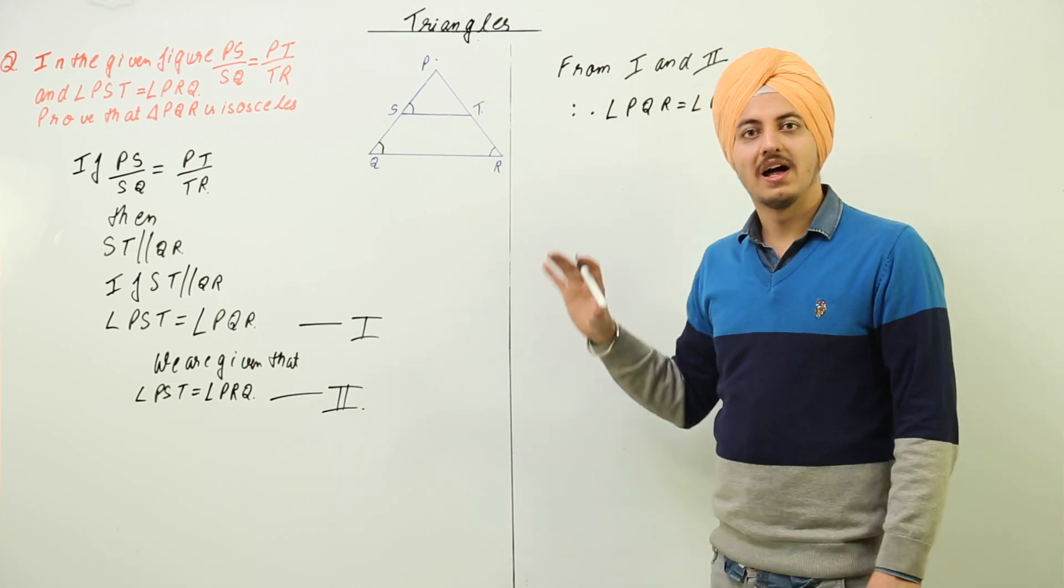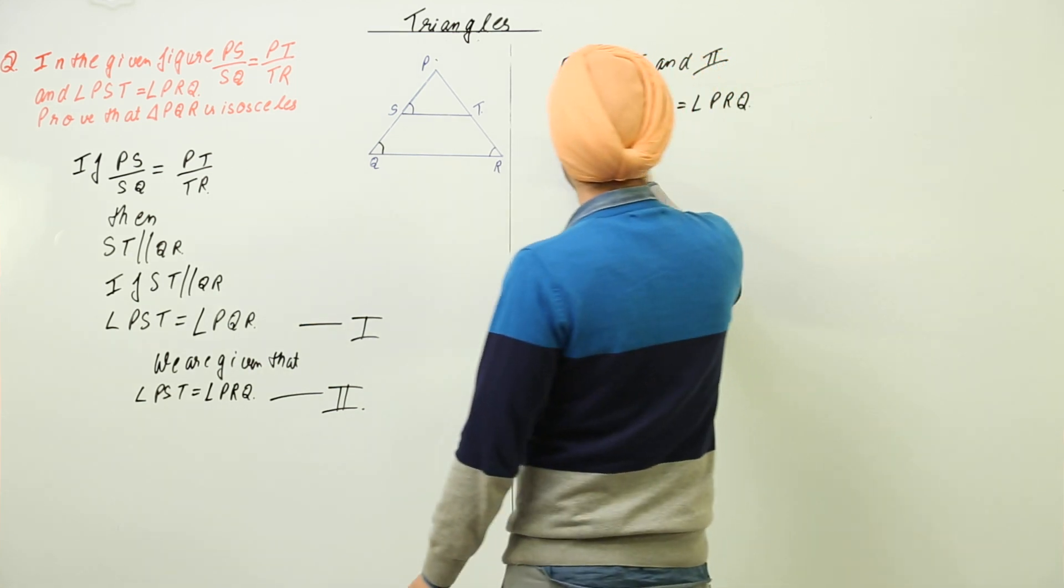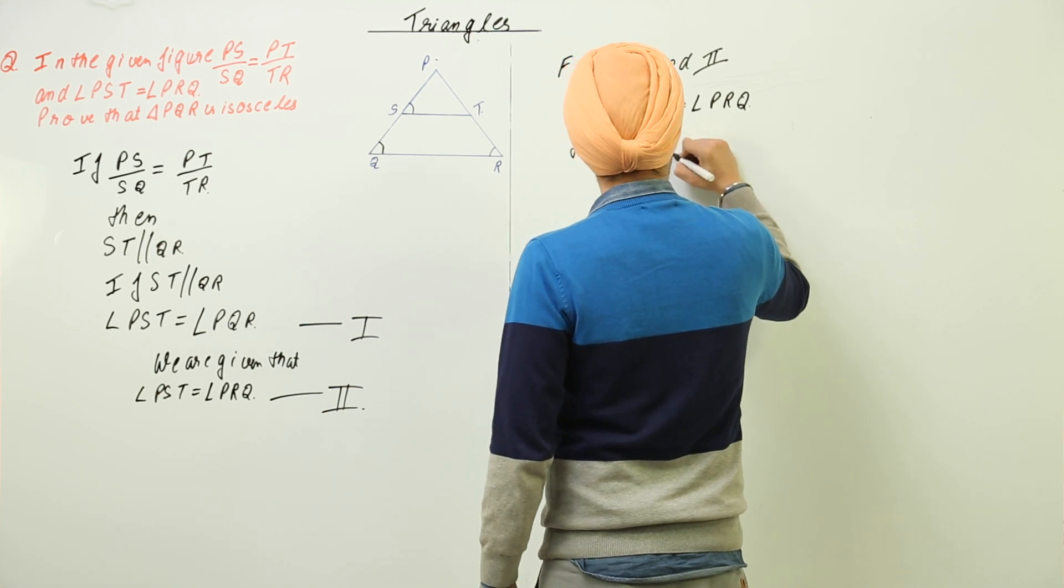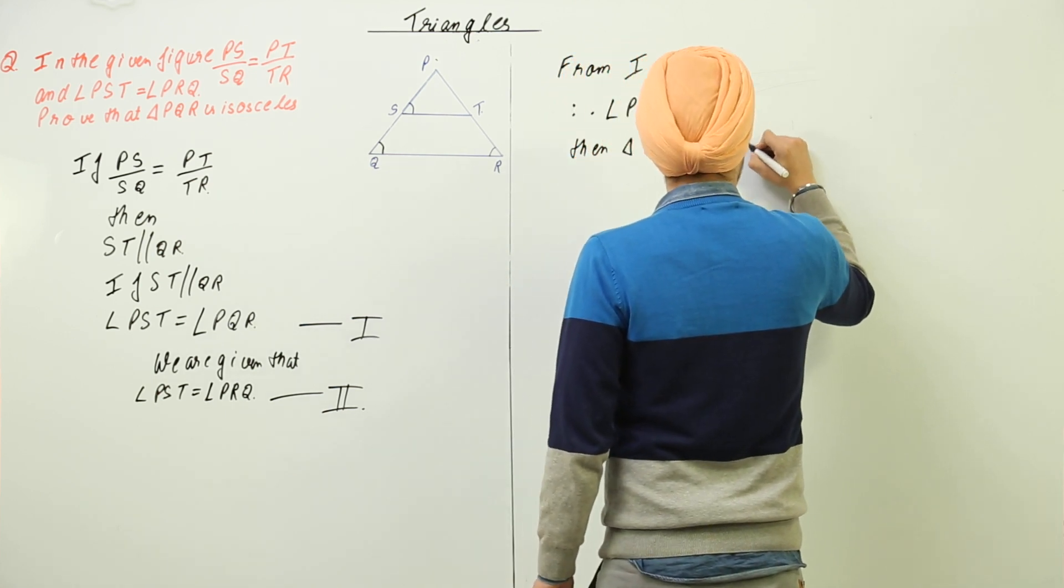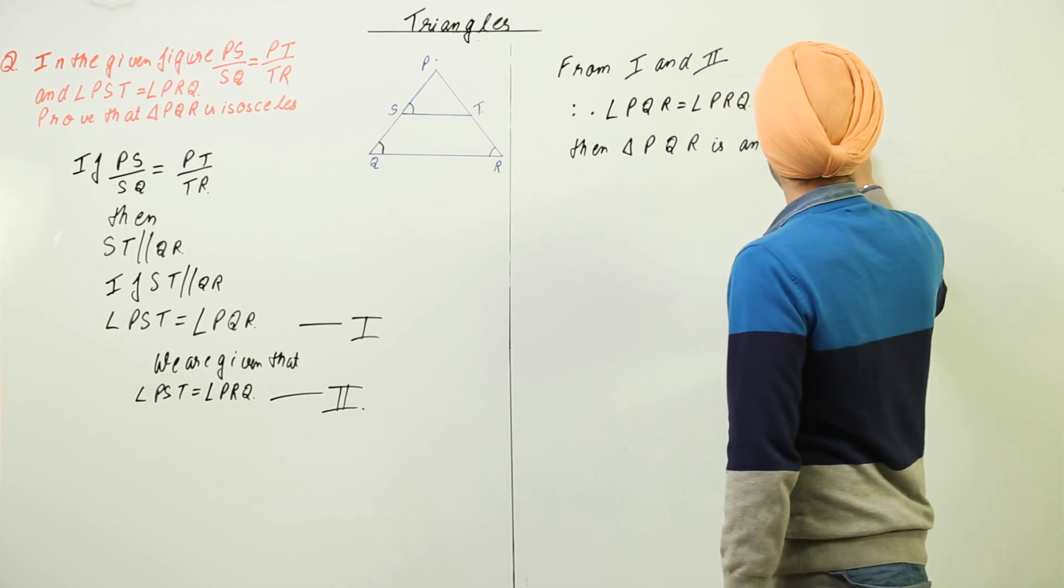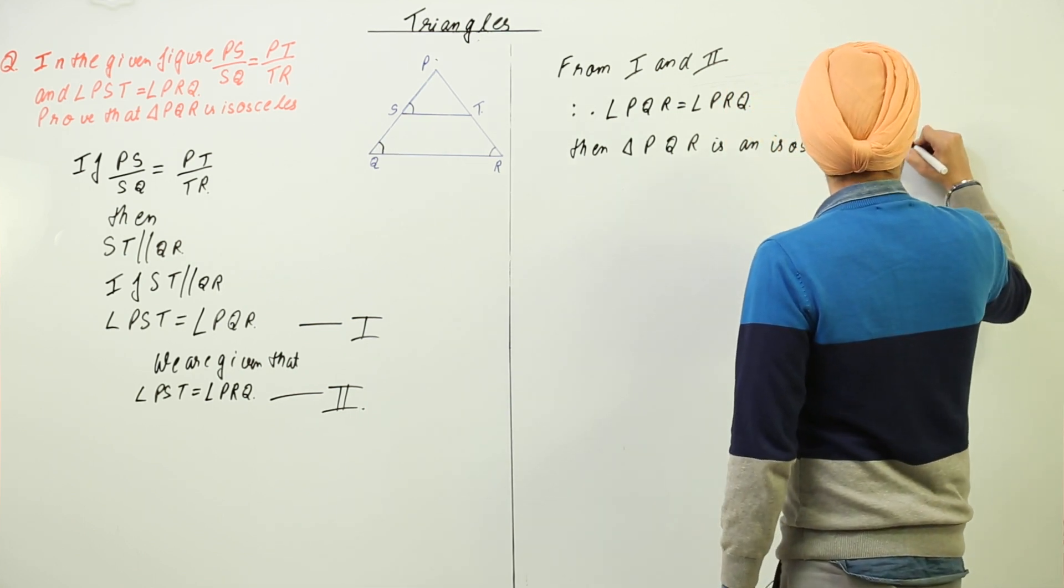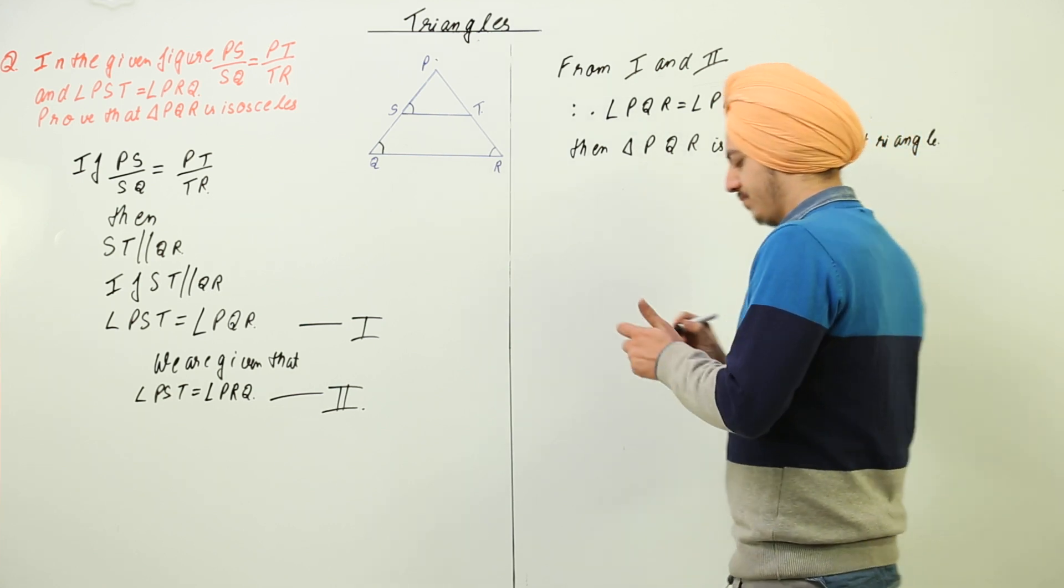If two angles of a triangle are equal, then triangle PQR is an isosceles triangle, and hence proved.